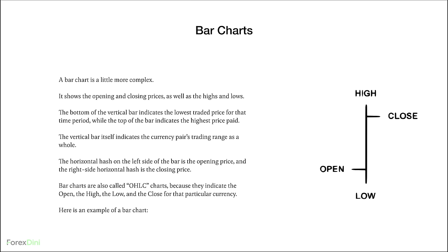Next up, we have a bar chart. A bar chart is a little more complex — it shows the opening and closing prices, as well as the highs and lows. The bottom of the vertical bar indicates the lowest traded price for that time period, whilst the top indicates the highest price paid. The horizontal hash on the left side of the bar is the opening price and the right side horizontal hash is the closing price. Bar charts are also called OHLC charts because they indicate the open, high, low, and close for that particular currency.